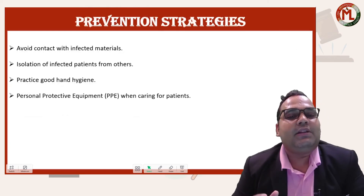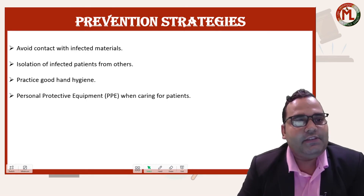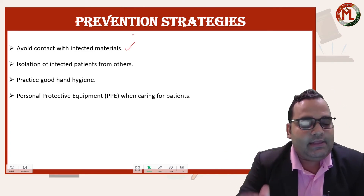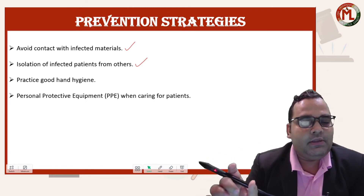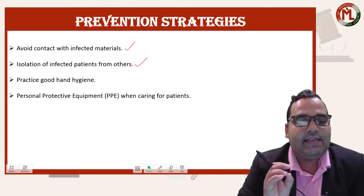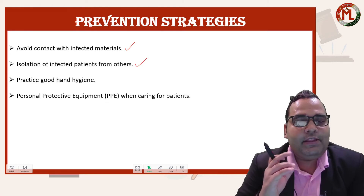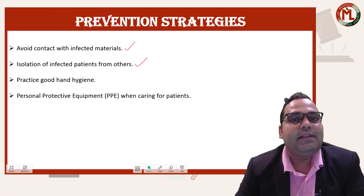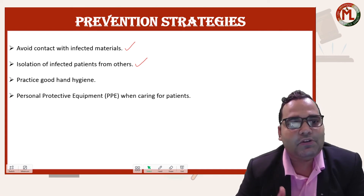The prevention strategies for monkeypox include: first, avoid contact with infected materials; second, isolation of infected persons from the general population; third, practicing good hand hygiene; and fourth, using personal protective equipment while offering care to monkeypox-infected patients. These are the guidelines outlined by the Ministry of Health and Family Welfare for the treatment of monkeypox patients in India.